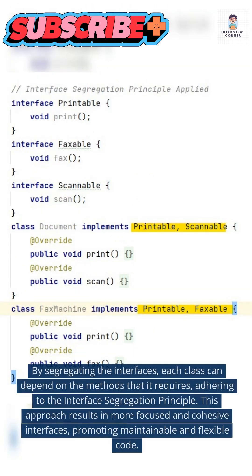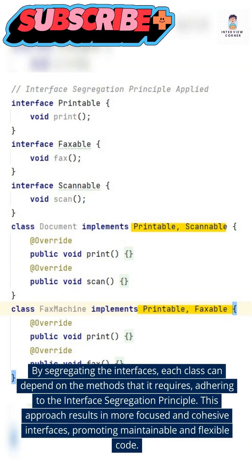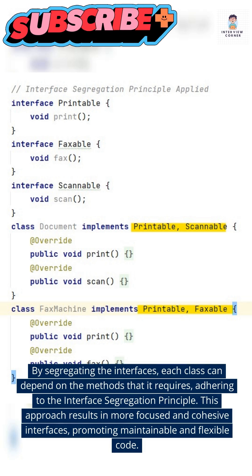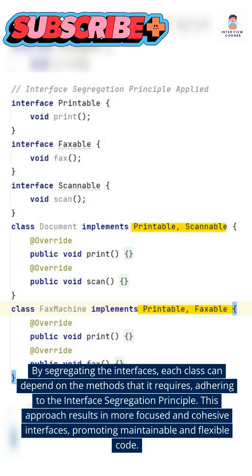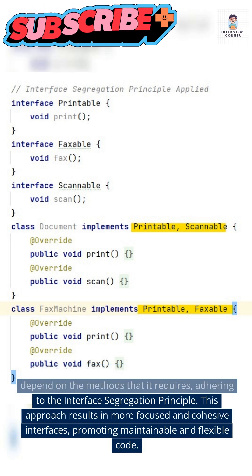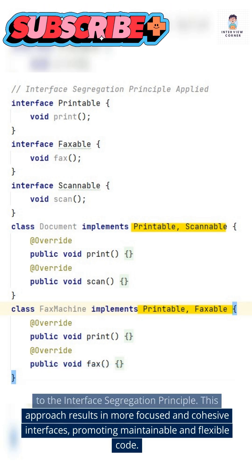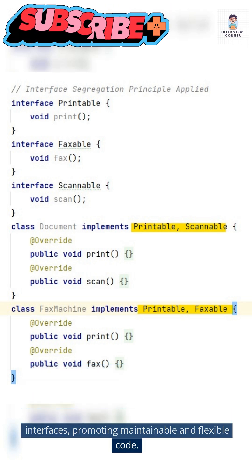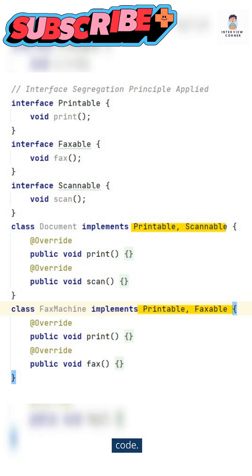By segregating the interfaces, each class can depend on the methods that it requires, adhering to the interface segregation principle. This approach results in more focused and cohesive interfaces, promoting maintainable and flexible code.